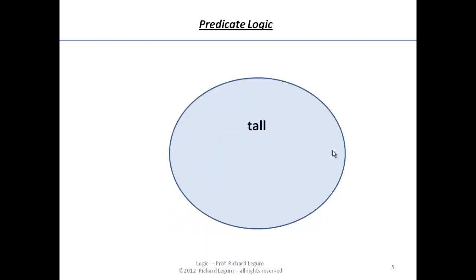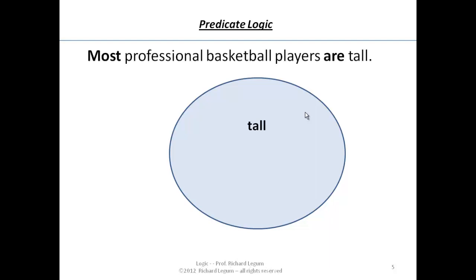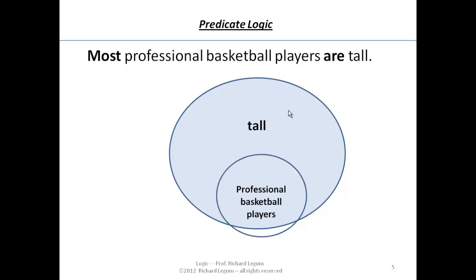Let's take a look at another one: 'Most basketball players are tall.' We look at the circle representing all of the tall things in the universe. When we say most basketball players are tall, we're saying that when you look at the class of professional basketball players, most of the things in that class are in the class of tall things.